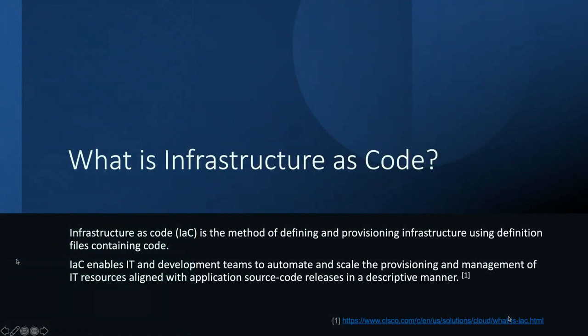So what is infrastructure as code? There are a number of quotes out there. You can go to Amazon, Azure, GCP — pick any infrastructure as code toolset — and you'll find a very closely aligned definition, which is really the defining and provisioning of our infrastructure. We define that in files as code, or codified infrastructure. It could be as simple as defining the different components or sequences that configure our infrastructure in a text file.